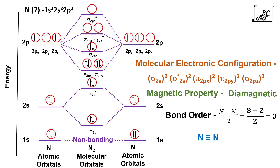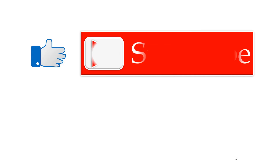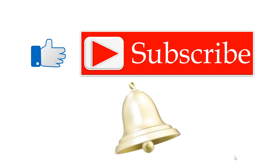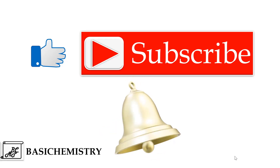That is how we have learned the molecular electronic configuration, magnetic property, and bond order in the case of boron, carbon, and nitrogen. In the next video, we will study the application of molecular orbital theory to oxygen, fluorine, and neon. If you like this video, click on like, share, and subscribe to my channel. If you want to ask something, mention it in the comment box. Also hit the bell icon to get notifications of my new videos, and keep watching Basic Chemistry. Thank you.